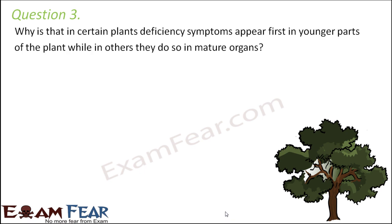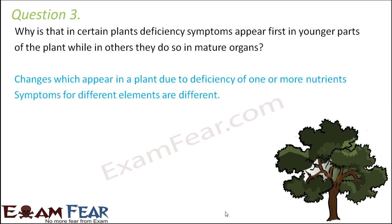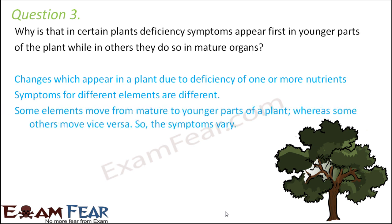Let us look at question number 3. Why is it that in certain plants deficiency symptoms appear first in younger parts of the plant, while in others they do so in mature organs? As I told you, the minerals are not static — they are mobile. Some minerals tend to move from younger parts towards the older parts, whereas some minerals tend to move from older parts towards the younger parts. So it depends upon the mobility of the mineral. If a mineral is moving from older parts to younger parts, the symptom will first appear in the older part; and vice versa. So the symptoms vary depending on how the mineral moves through the plant.